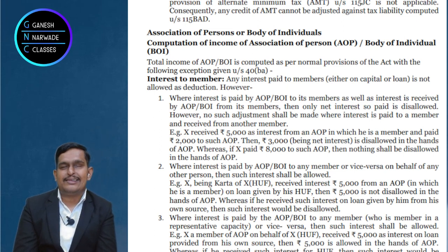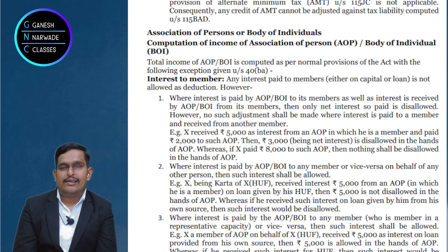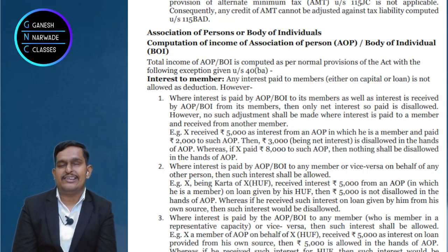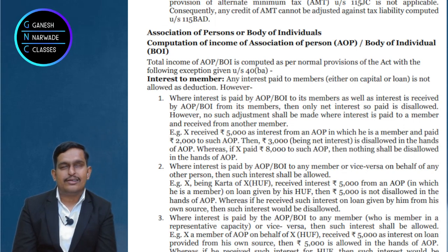Suppose Vidya Bharati is an association — a wonderful initiative by RSS. In Vidya Bharati, suppose there are three members: Ram, Shyam, Ganshyam. These three are the members. You may say, Sir, Body of Individuals — but from income tax perspective it does not make any difference. So let us continue with the same example. Ram, Shyam, Ganshyam are the three members in an association called Vidya Bharati and truly they are working very well.